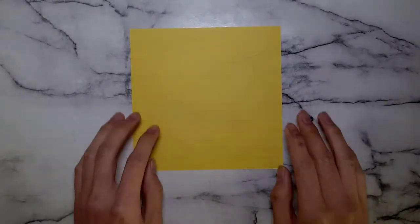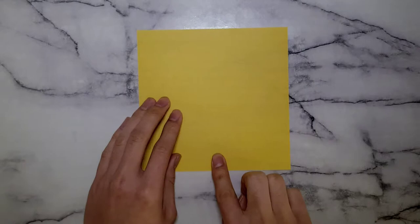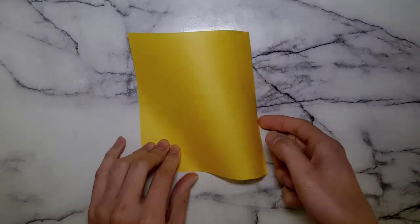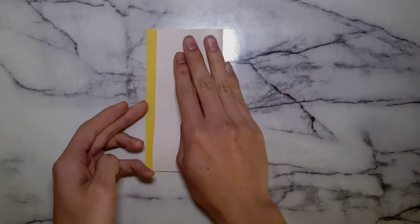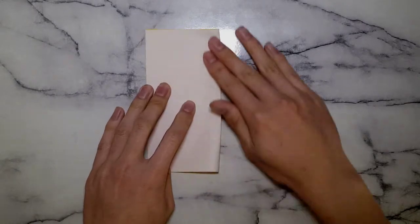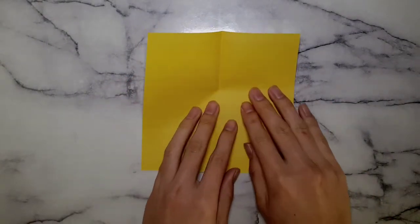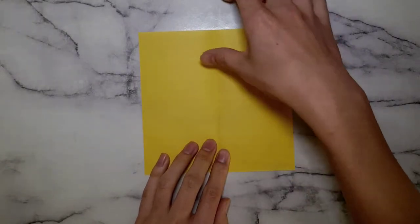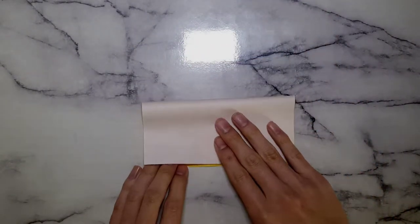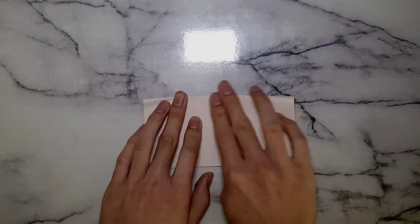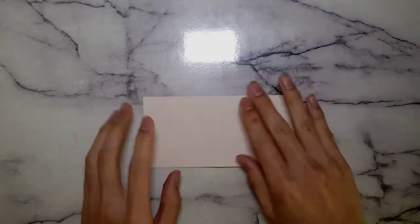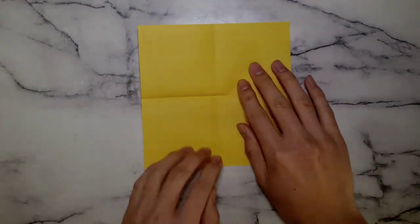So I'm going with a square piece of paper in front of you, making sure it's color-side up. We're just going to fold it in half vertically and horizontally. I'm just going to unfold it and then refold it horizontally, making like a cross on the paper.